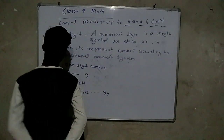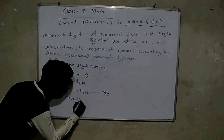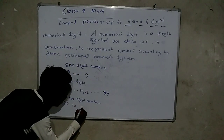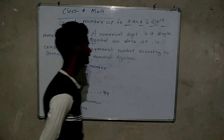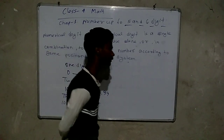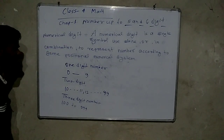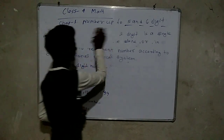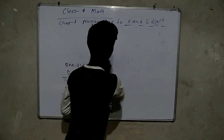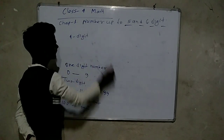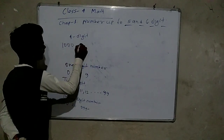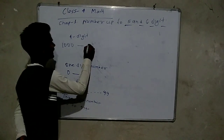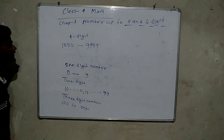And again, the 3-digit number starts from 100 and goes up to 999.